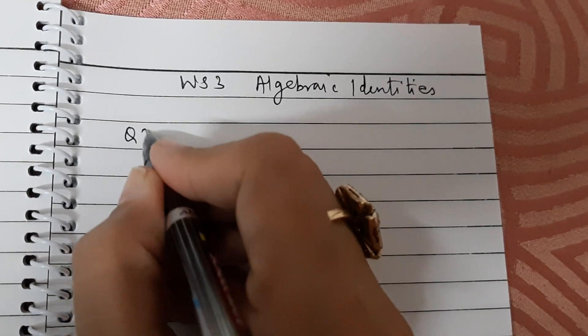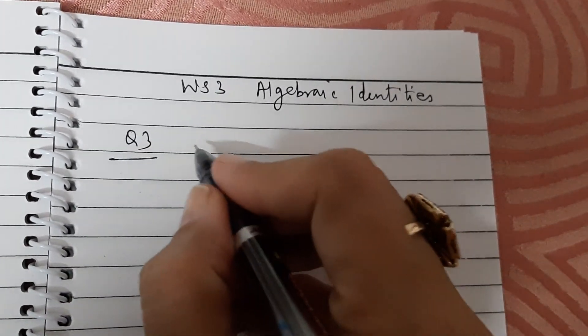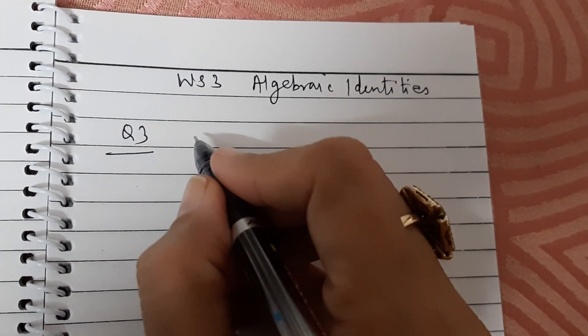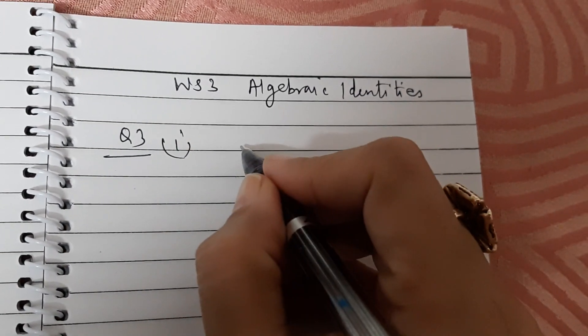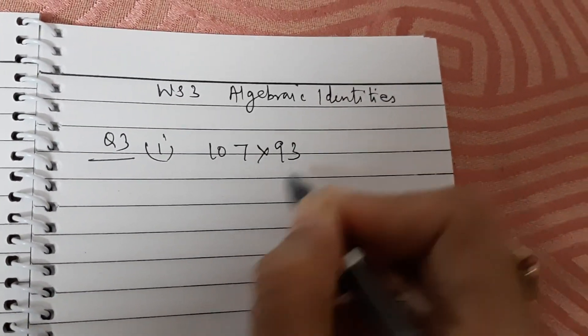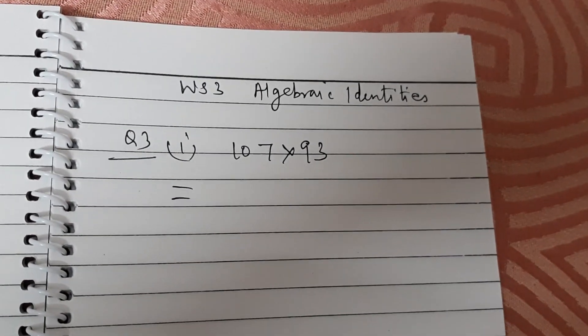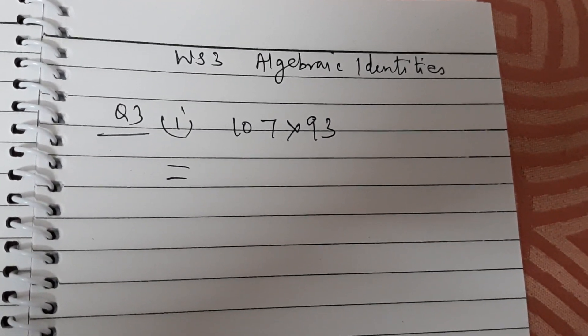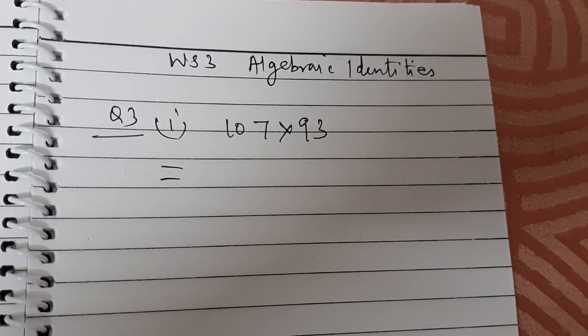Question number 3, we have to simplify the products. First one is 107 multiply by 93. For solving this question we will be using algebraic identity.